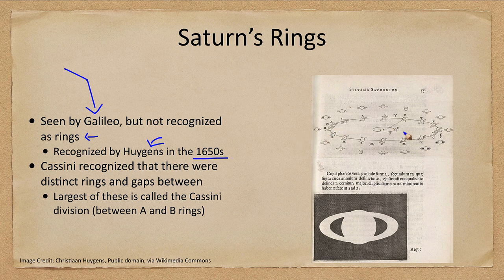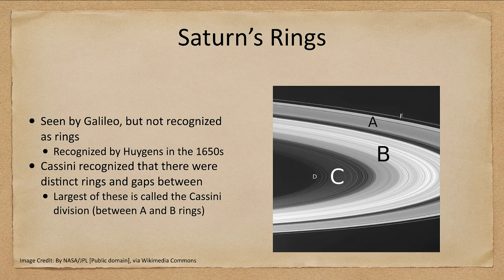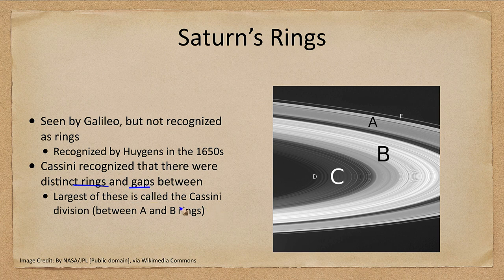Depending on the orientation of Earth relative to the ring plane, we sometimes see the rings as almost invisible — just a thin line cutting across the planet. At other times we see the rings tilted and we're looking at either the top or the bottom of the rings very clearly. It was Cassini who recognized that there were distinct rings, labeled the A, B, and C rings as the first three primary rings discovered. The D ring is very faint and interior, the F ring is exterior and very thin. Cassini noted distinct rings and gaps, the largest being the Cassini division between the A and B rings.